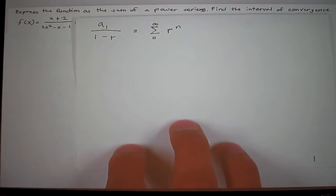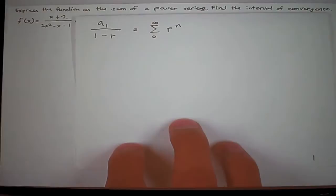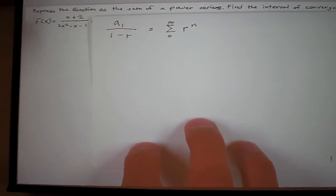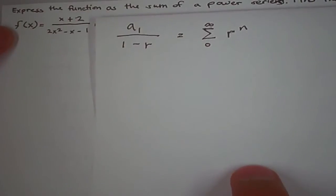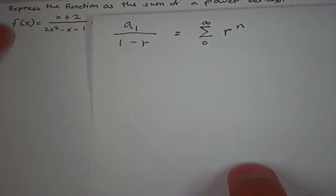Express the function as the sum of a power series and find the interval of convergence. We have f(x) is equal to x plus 2, over 2x squared minus x minus 1.